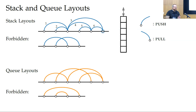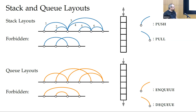We can do the same for queues, using enqueue and dequeue operations — adding at the top and removing at the bottom. We start with one, add it; add two; then remove number one from the bottom. We add three, add four, then remove number two from the bottom, and then the other two.